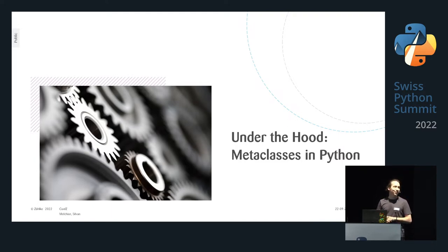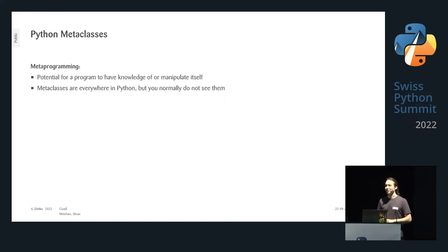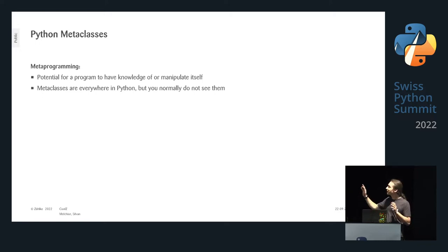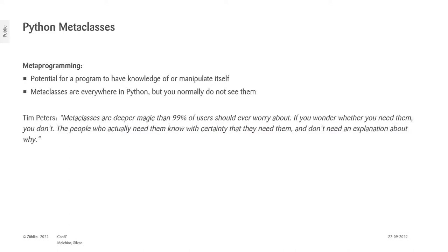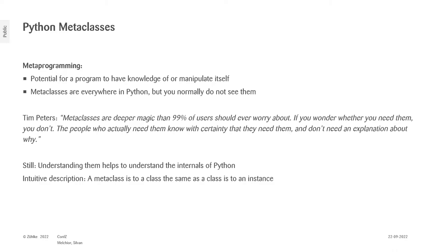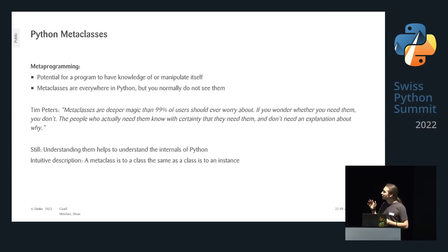Now we go under the hood. You may have heard that you should not use metaclasses in Python — and actually we had to use them in this project. What is a Python metaclass? First, what is metaprogramming? It's the potential for a program to have knowledge of or manipulate itself. Metaclasses are actually everywhere in Python — you just don't see them. According to Tim Peters, one of the original CPython implementers, 99% of users should not care about them, and if you ever wonder if you need them, you don't.